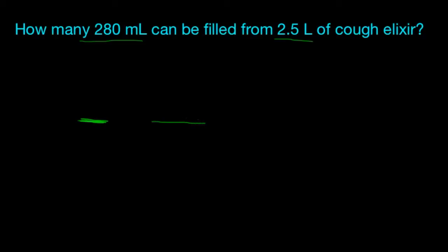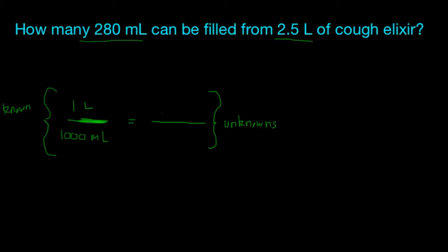A lot of these problems are going to be the same — you're going to have a fraction equals a fraction. On the left side we have our knowns, and this is where conversions become very handy. On the right side there are our unknowns. We're dealing with liters and milliliters, and we know that one liter holds 1,000 milliliters. They're giving us 2.5 liters, so we put that as our unknown and X milliliters, because we want to know how many milliliters are in 2.5 liters. Always label your units.